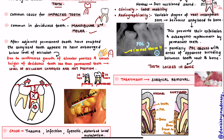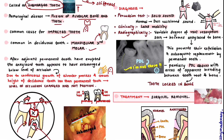The causes include: trauma to the patient, which causes the deciduous tooth to fuse with the alveolar bone; infection, which prevents the deciduous tooth from exfoliating so it is retained in the oral cavity; and genetic reasons or disturbance in local metabolism, which also prevents the deciduous mandibular molar from falling and causes it to be retained or fused with the alveolar bone.